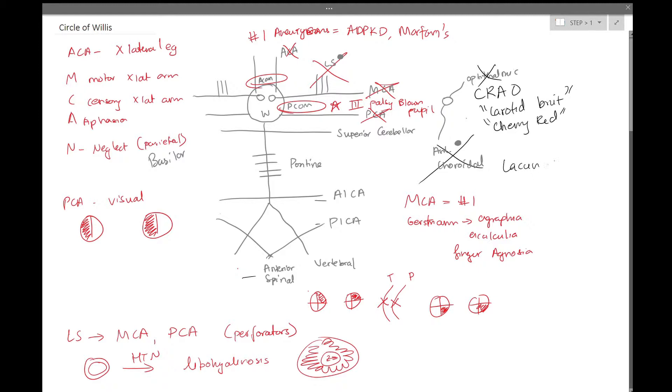Anterior choroidal we didn't really discuss because it's basically the same thing as the lacunar syndromes, because this also feeds the deeper structures of the brain on the medial aspect. Superior cerebellar would just cause some hemiataxia. It's not really super common of an artery to be infarcted generally.